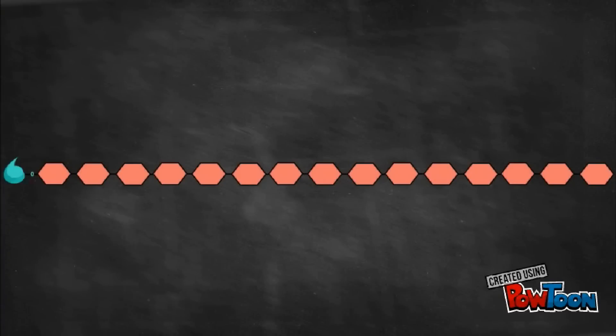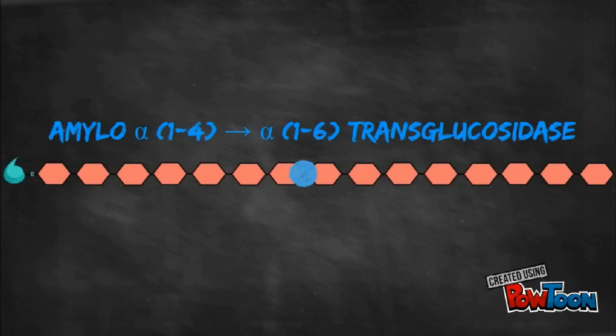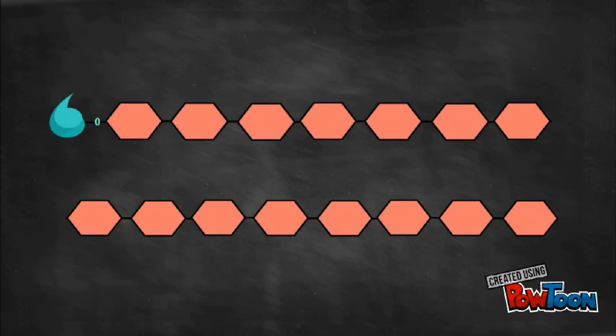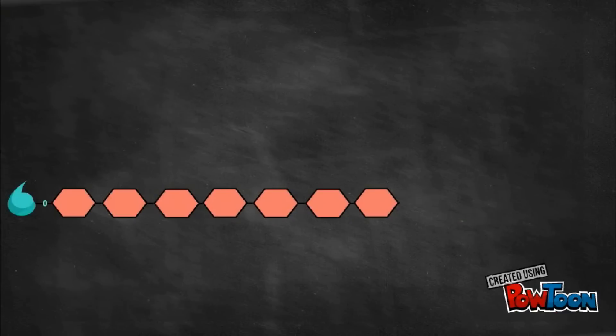Step 4, formation of branches. The branches are made by the action of the enzyme amylo-alpha-1,4 to alpha-1,6-transglucosidase. It removes a set of 6 to 8 glucosyl residues from the non-reducing end of the glycogen chain, breaking an alpha-1,4 bond.